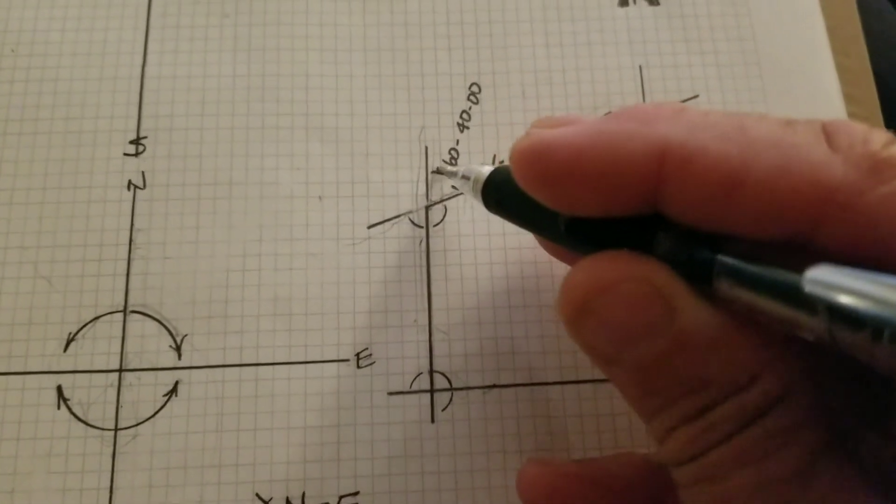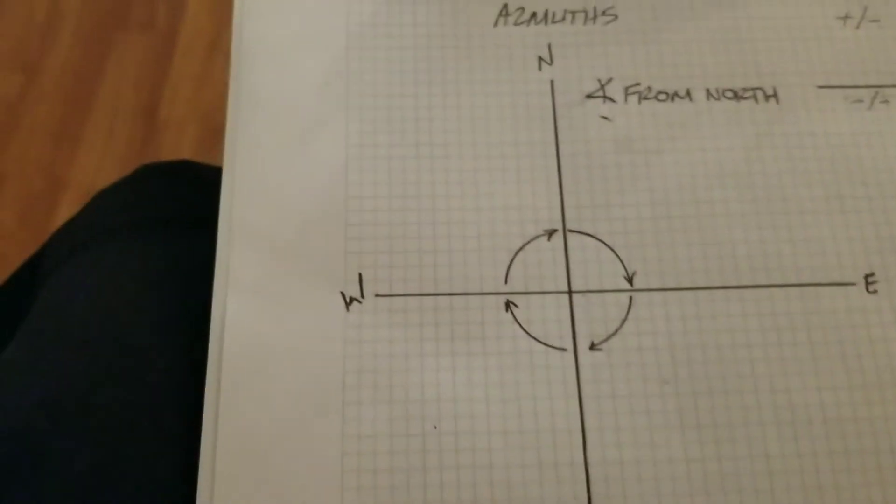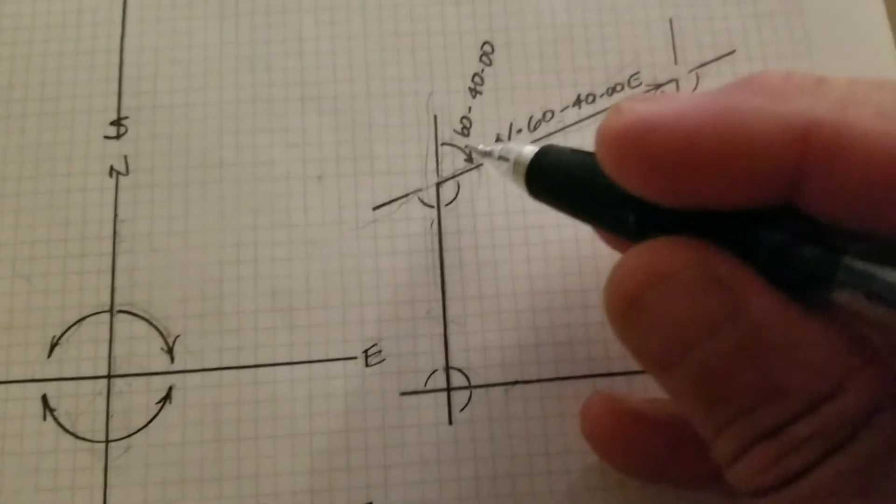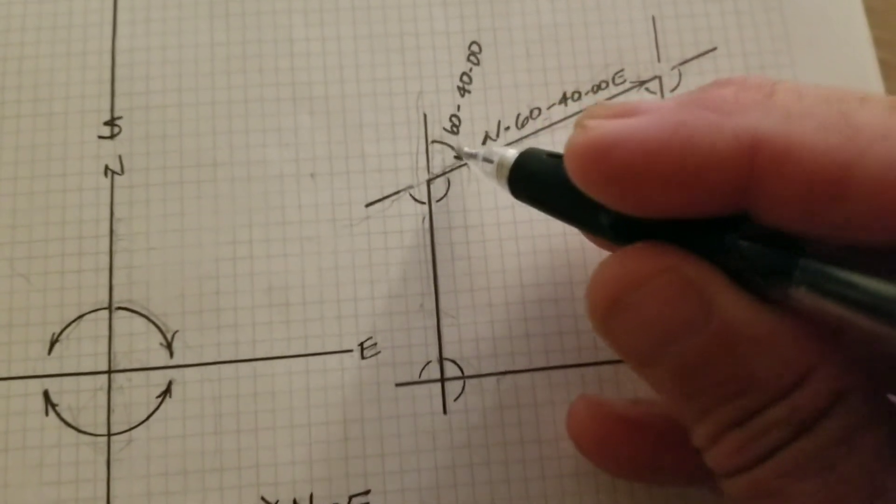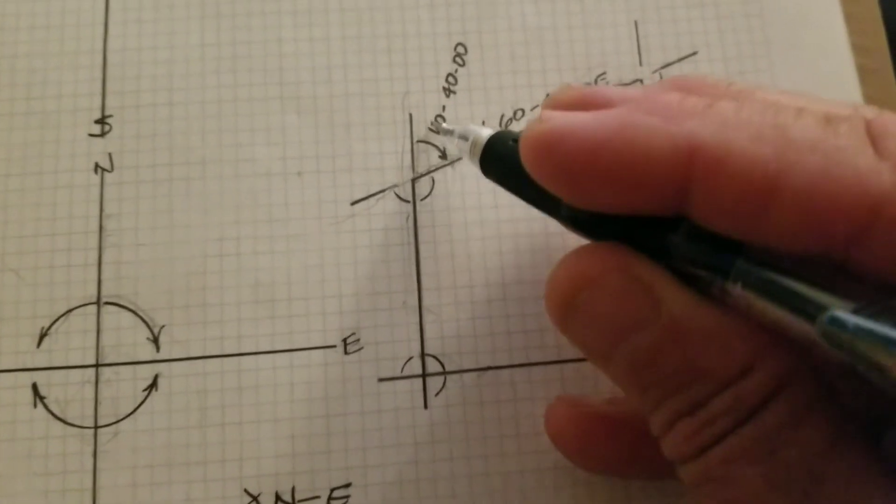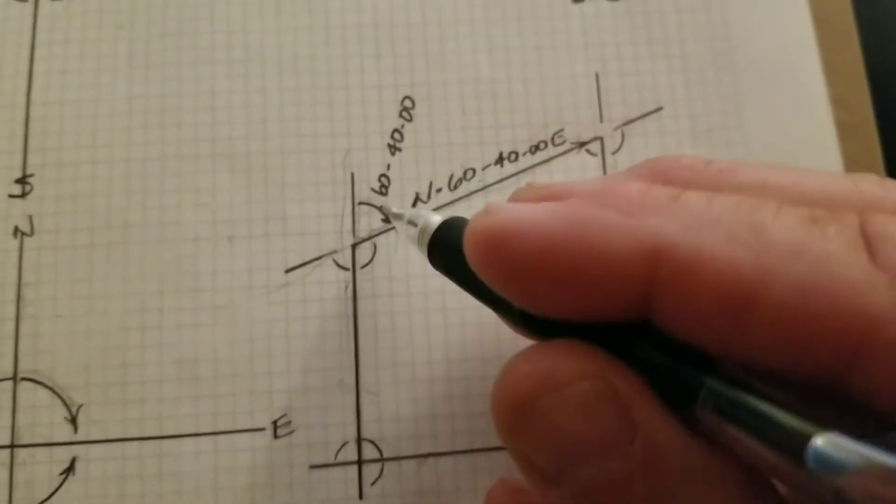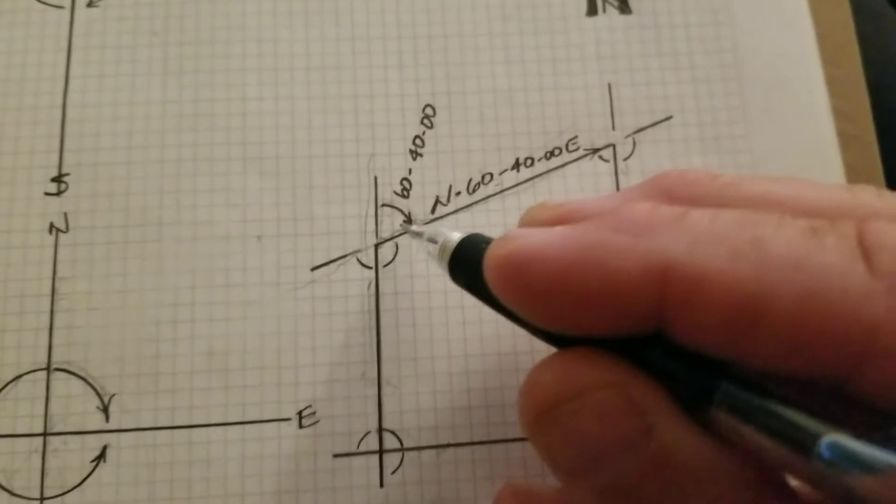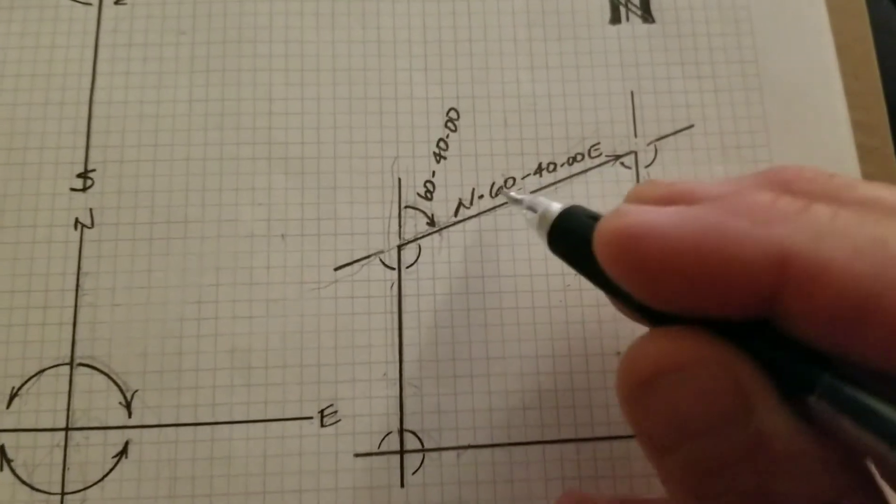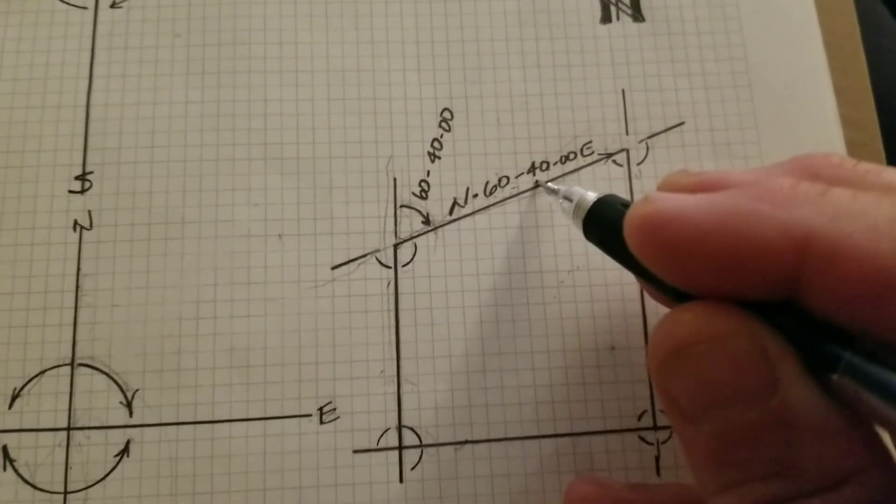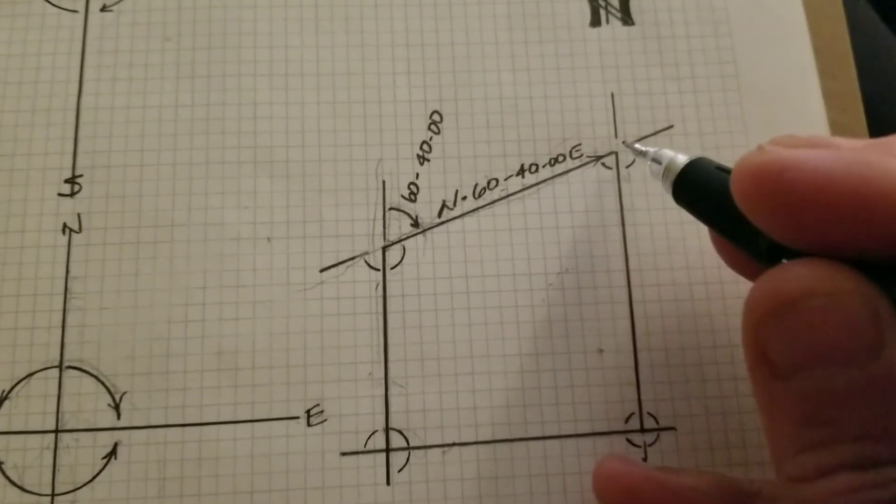And then, an azimuth of 60 degrees, or a 60 degree, 40 minute, zero second turn here. Now, it changes that bearing into a north 60, 40, zero, zero, east bearing.